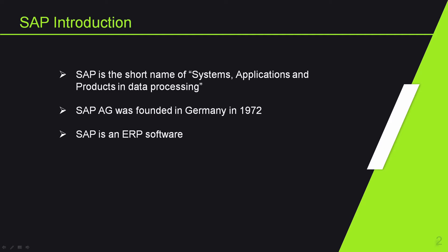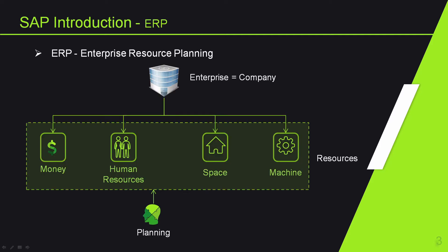SAP is an ERP software. Let's understand what ERP is before we go deeper into SAP. ERP is a short form of Enterprise Resource Planning. Enterprise is another word for business or company. Business needs resources in order to operate, such as employees, machinery, money, etc.